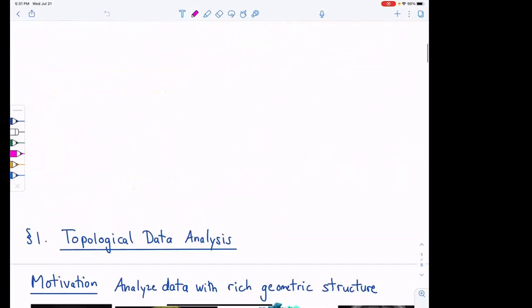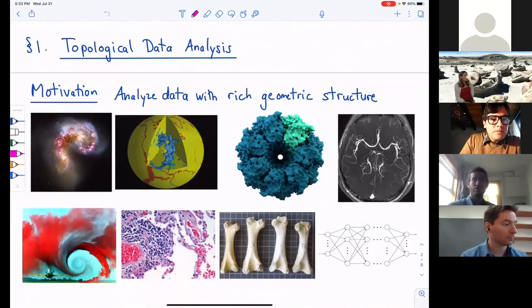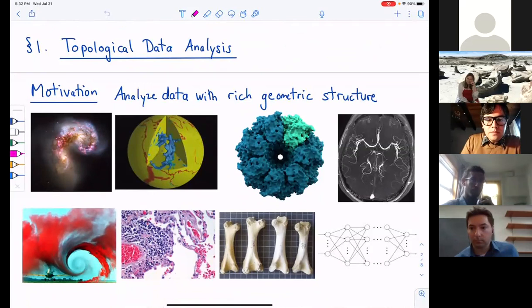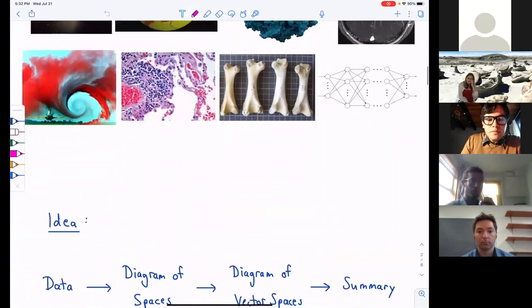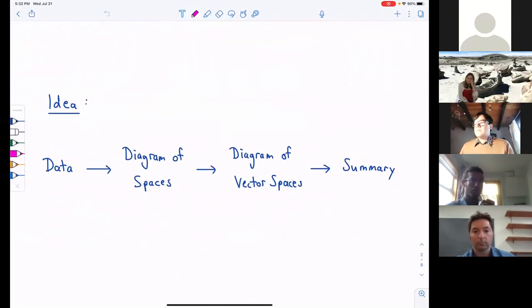So to start, topological data analysis is a relatively new subject whose goal is to analyze data with a rich geometric structure. We're particularly interested in data where the geometry is both crucial for understanding the data and is sufficiently complicated that standard tools in applied mathematics have a difficult time capturing all of the structure. One of the main tools in topological data analysis is persistent homology. I'll explain that to you in detail in just a little bit. But first, let me give you a brief overview of the main idea. We start with scientific data and encode that as a diagram of spaces. To that, we apply homology with coefficients in a field to get a diagram of vector spaces. And then we extract some invariants of that diagram and the resulting summary is then fed into subsequent analysis.